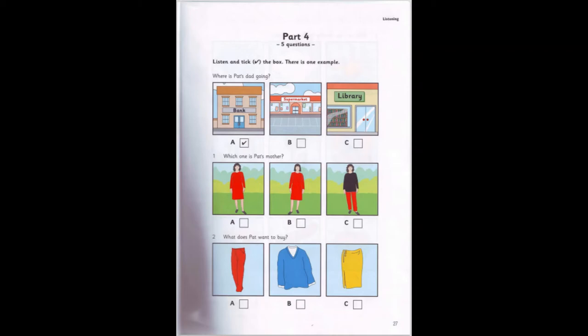Where is Pat's dad going? Is that your father walking to the bus stop, Pat? Yes, it is, Sam. Where's he going? He's going to town for mum. Is he going to the supermarket? No, I went there yesterday. And mum's going to the library this afternoon. Oh, I know. He's going to the bank.